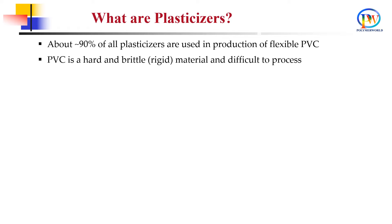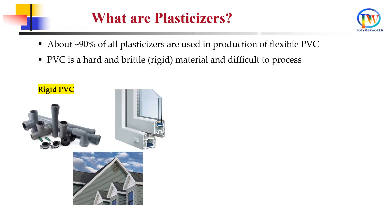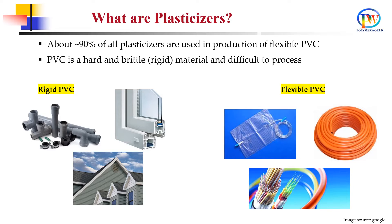Rigid PVC is mainly used in pipes, siding and window profile applications. Whereas flexible PVC can be used for many other applications such as shower curtains, vinyl flooring, clothing, bags, flexible plastic tubing, electric wire coating, etc.